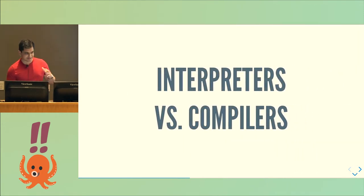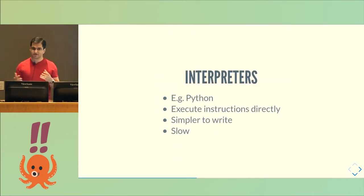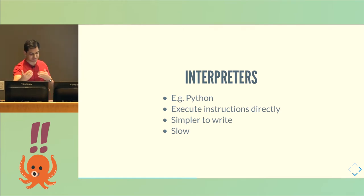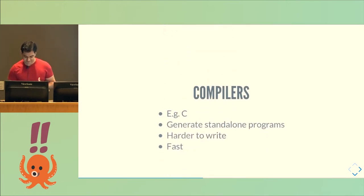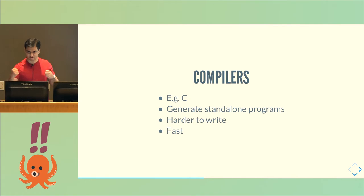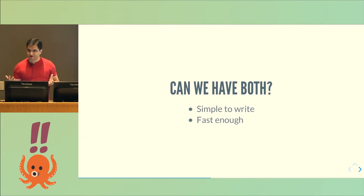Let me take a slight detour and talk about interpreters versus compilers. Python, for example, is usually interpreted — an interpreter looks at instructions one by one, changes its own state or performs actions in the outside world. These programs are relatively simple to write, but slow, because they consider each instruction one at a time. In contrast, languages like C are typically compiled. A compiler looks at a whole source program, does a bunch of work, and generates another program usually in a different language. These are hard to write, but the output is usually faster.